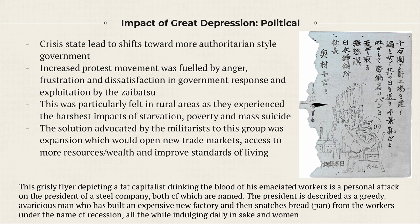The crisis state led to a shift towards authoritarian rule. There was an increase in protest movements fueled by anger, frustration, dissatisfaction with the zaibatsu exploitation, and weak government responses, particularly felt in rural areas. The solution advocated by militarists was expansion — opening new trade markets, accessing more resources and wealth. Japan had already expanded via the Russo-Japanese War, taking control of Korea, making it a formal colony in 1910 after a protectorate since 1905. At this time, China was on the doorstep and looking relatively weak, offering great potential.